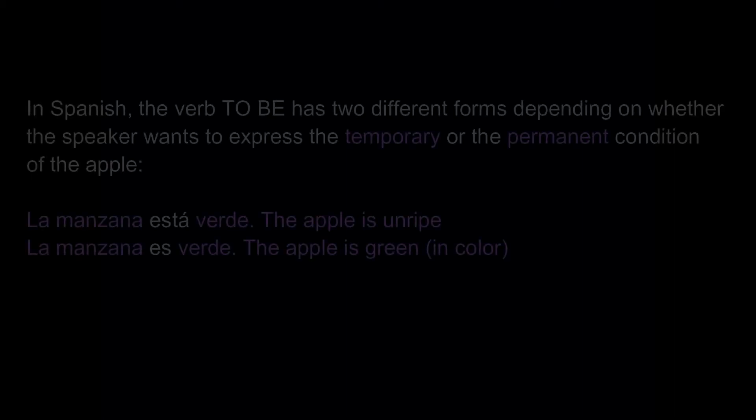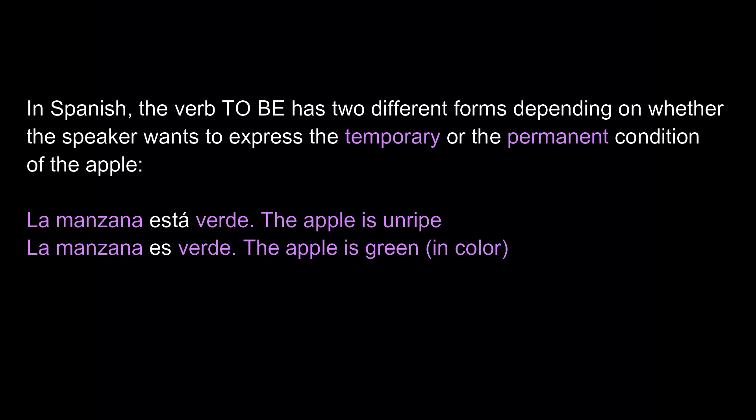In Spanish, the verb 'to be' has two different forms depending on whether the speaker wants to express the temporary or the permanent condition. 'La manzana está verde' — the apple is unripe. 'La manzana es verde' — the apple is green in color.